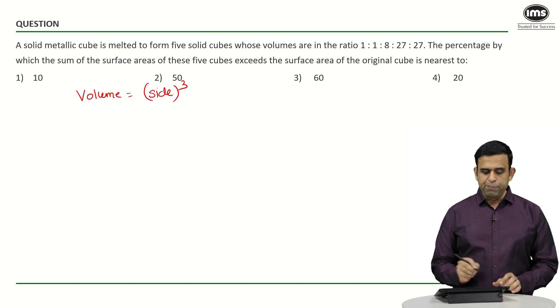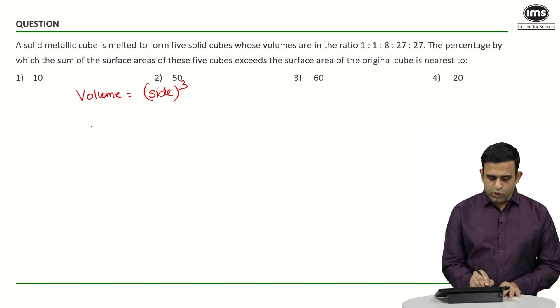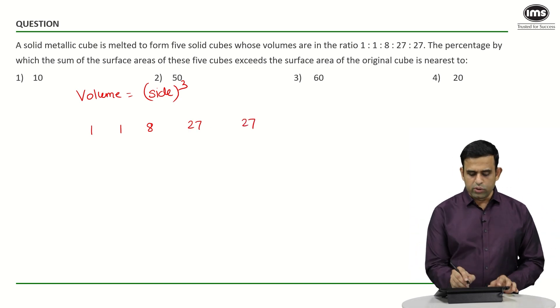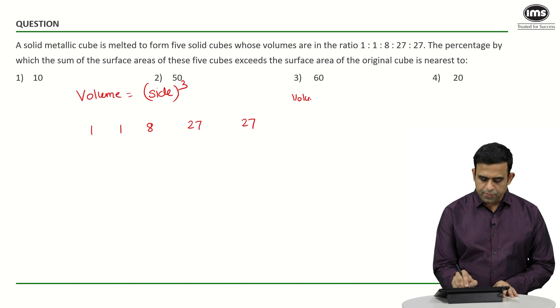If the volumes are 1, 1, 8, 27, and 27, what about the volume of the original cube?